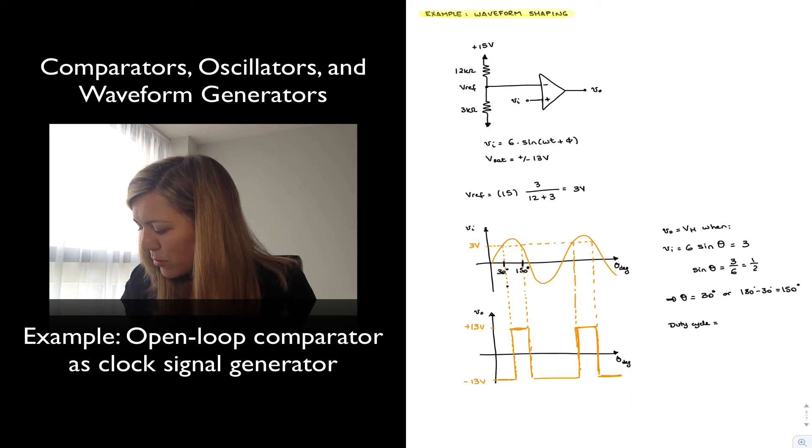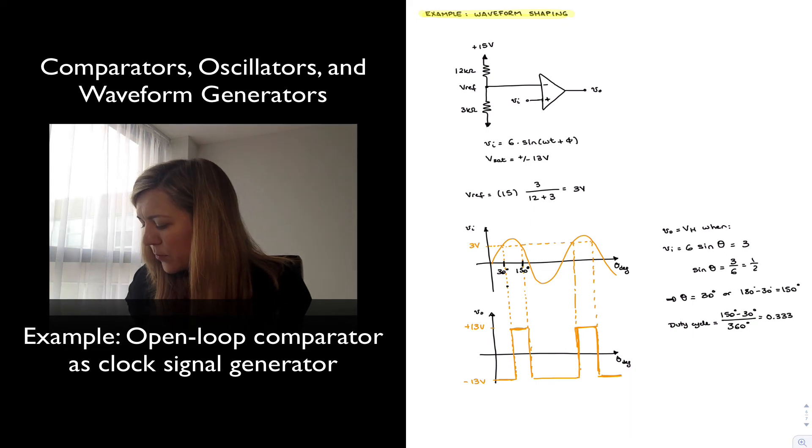...it will essentially be 150 minus 30, which is 120, divided by 360 degrees, which is 0.333 or one third. Therefore I can also express my duty cycle as a percentage as 33.3 percent.